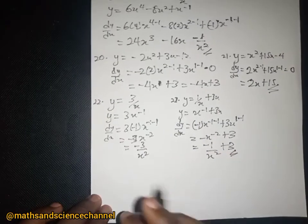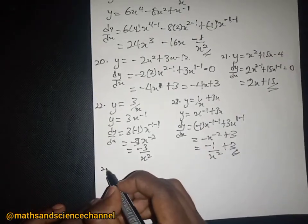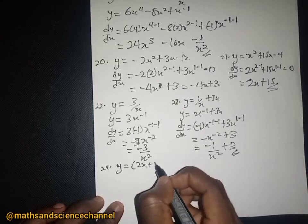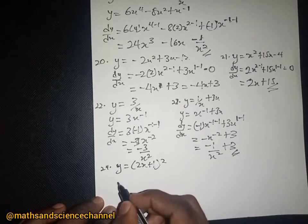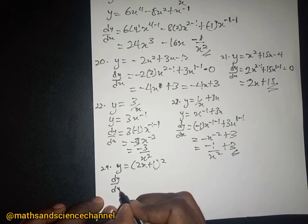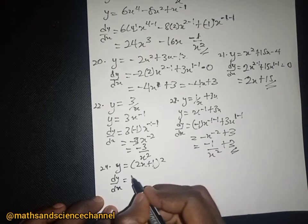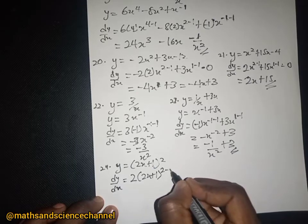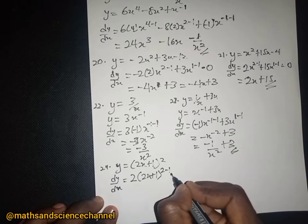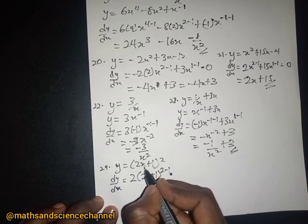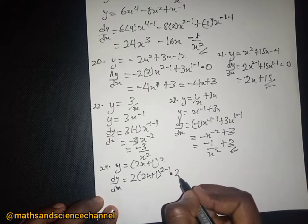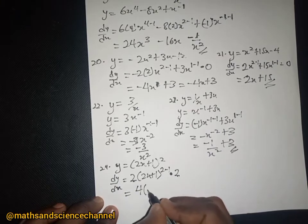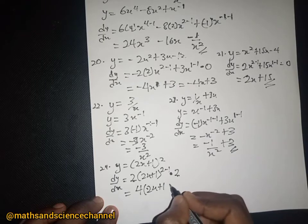Example 24: y equal to (2x plus 1) squared. The dy/dx will be — we drop the 2, write the same base, subtract 1 from the exponent, and also differentiate 2x plus 1 which is 2 — so we get 2 multiplied by 2 giving 4 times (2x plus 1).